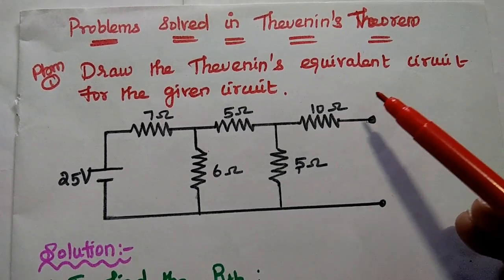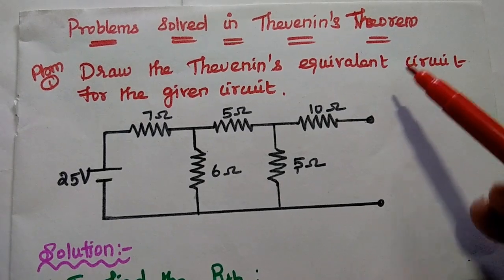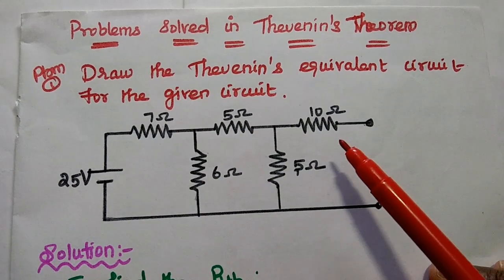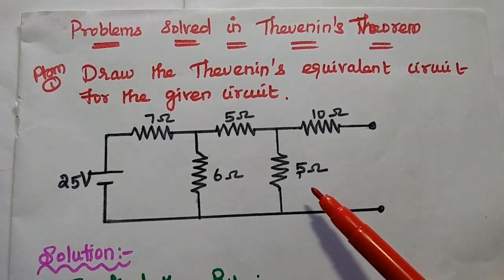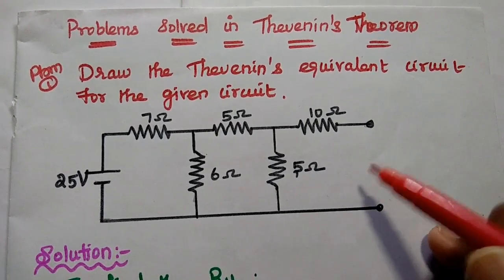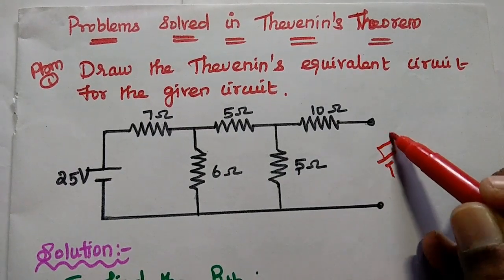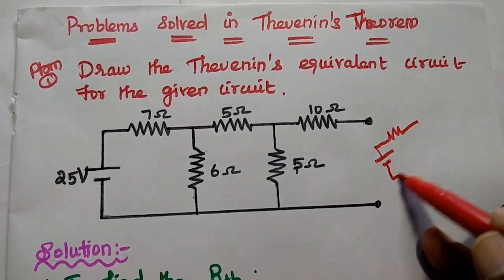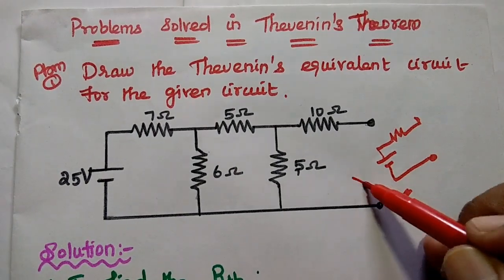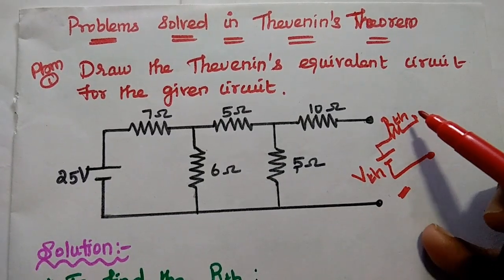Dear students, now we are going to solve important problems in Thevenin's theorem. The first problem is to draw the Thevenin's equivalent circuit for the given circuit. Thevenin's equivalent circuit is nothing but a Thevenin's voltage in series with Thevenin's equivalent resistance. We are going to find out the Thevenin's voltage and Thevenin's equivalent resistance.